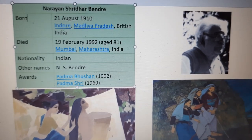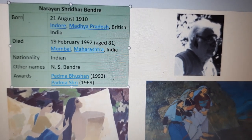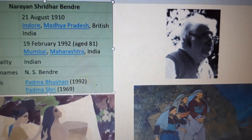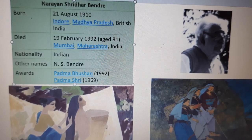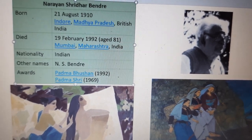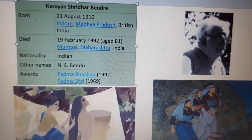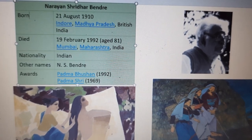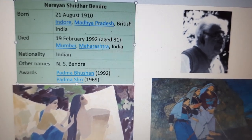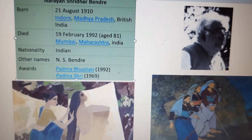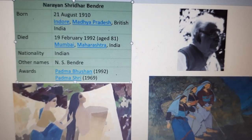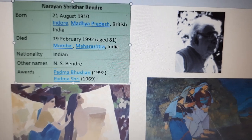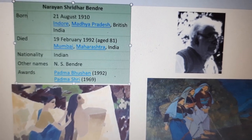Next is Narayan Shridhar Bendre. He was born on 21st August 1910 in Indore, Madhya Pradesh, British India. He passed away on 19th February 1992 at the age of 81, in Mumbai, Maharashtra. His nationality was Indian; he is also known as N.S. Bendre. Awards: Padma Bhushan in 1992 and Padma Shri in 1969. These are his works — you can see common daily routines.